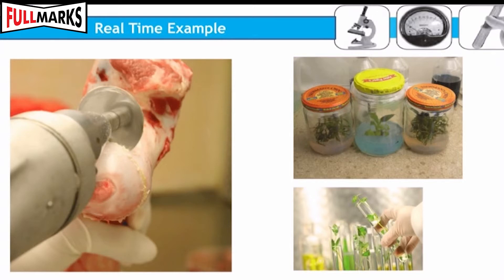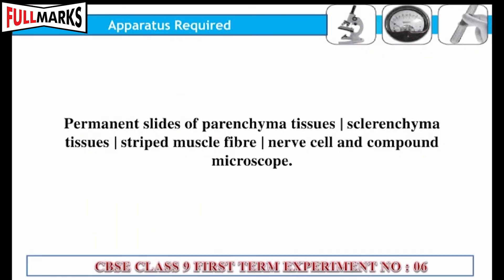We will also study animal tissues and their components like epithelial, connective, muscular, and nervous tissue. The apparatus required includes permanent slides of parenchyma tissue, sclerenchyma tissue, striped muscle fiber, nerve cell, and a compound microscope.